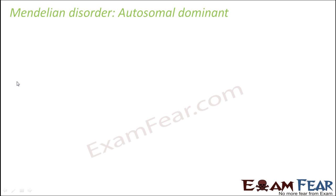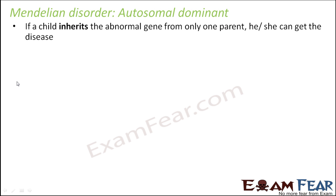Let's start with autosomal dominant. As the name suggests, if a child inherits the abnormal gene from only one parent, he or she can get the disease. Autosomal means the disease gets inherited through the autosomes — the defective gene is present on the autosomes, so sex chromosomes do not play a role. Dominant means even if a person inherits one abnormal gene, that person will get the disease.